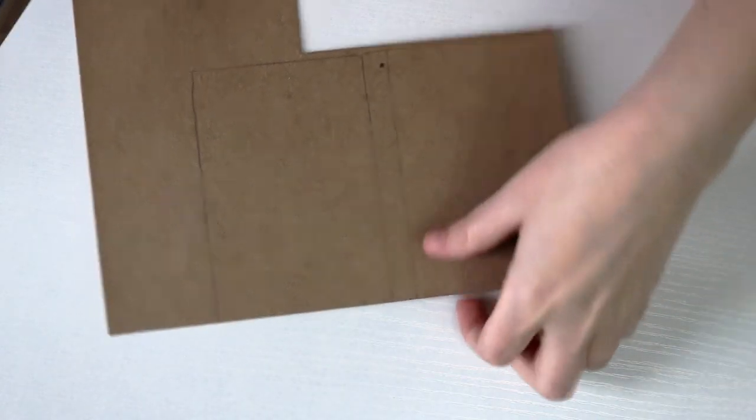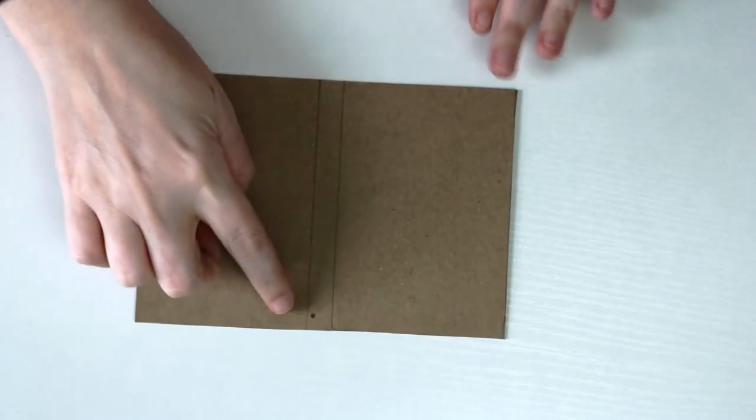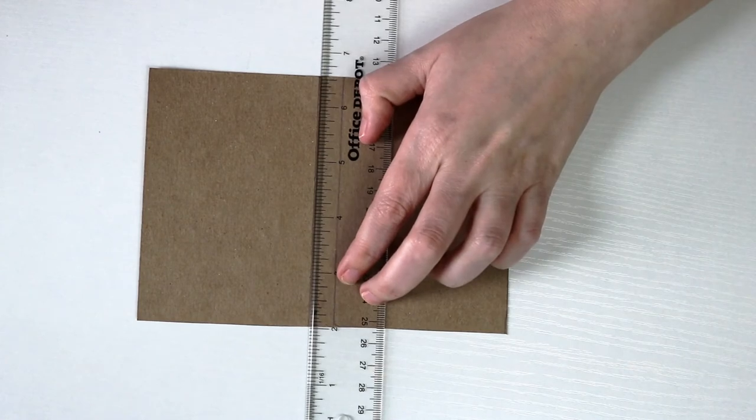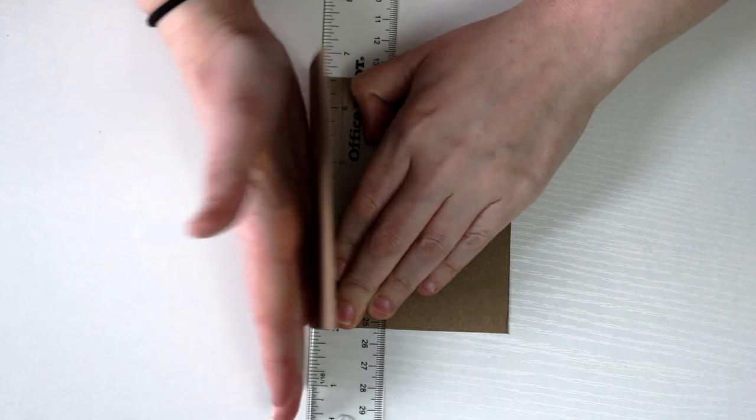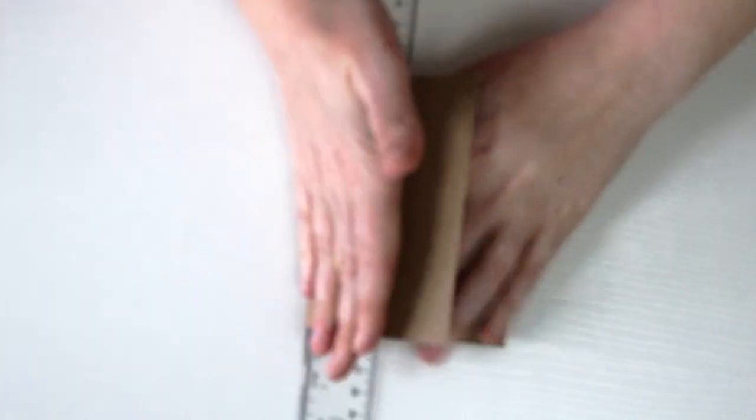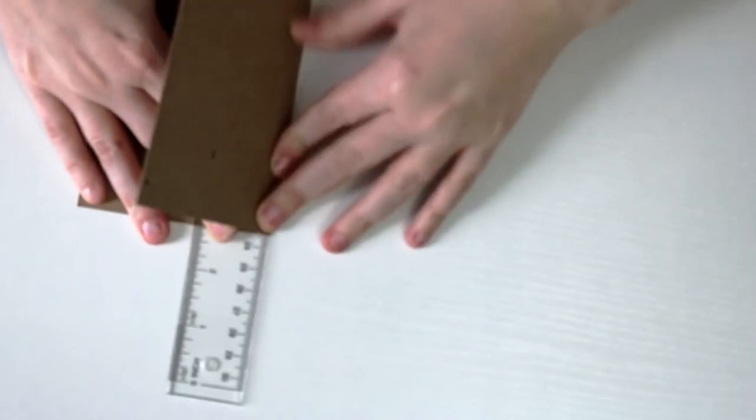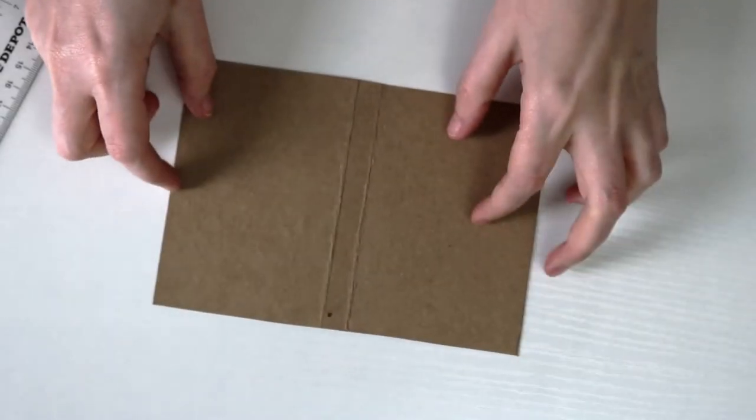This chipboard is thin enough that I can just cut it with scissors. So now we want to fold along those lines of what's going to be the spine of the book. If you have a bone folder that would be helpful. I can't find mine at the moment so I'm just going to use my ruler as an edge and bend it over. So that looks pretty good.